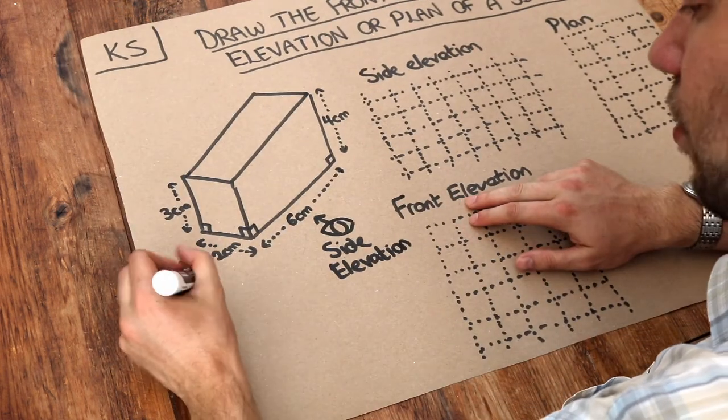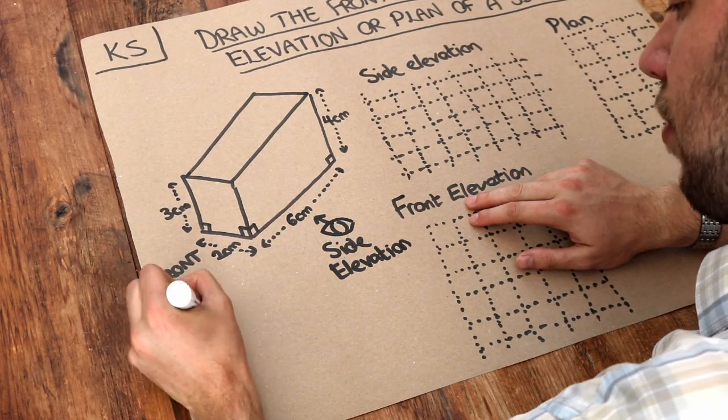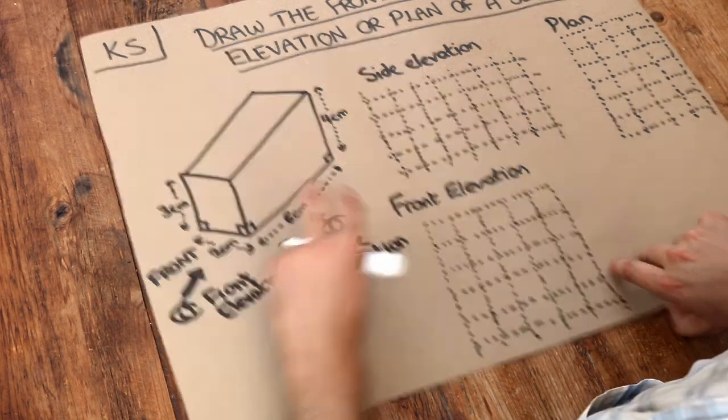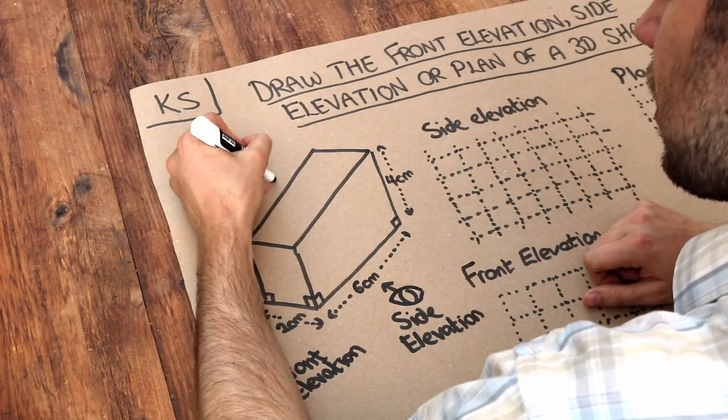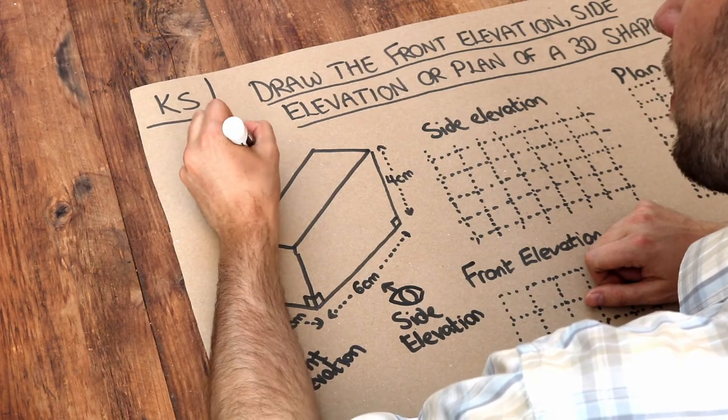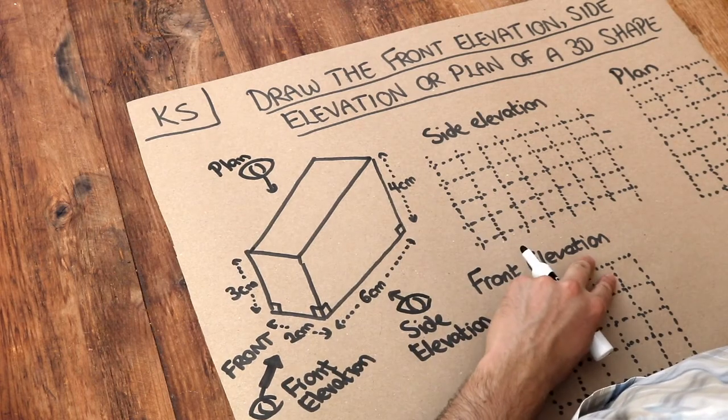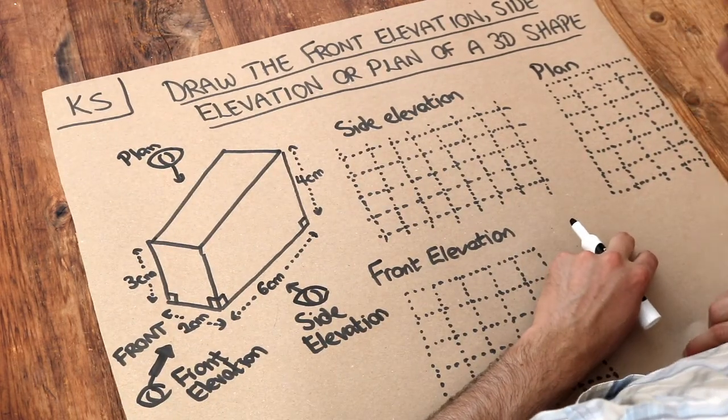As we said this view here would be the front elevation and the view from the top of the shape looking down is known as the plan. And architects use this a lot when they're designing buildings and other constructions.